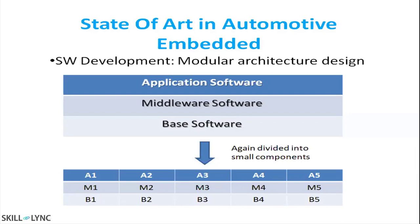Software development uses a modular design approach. As you can see in the slide, we have application software, middleware software, and base software. These three are a very basic classification — there is a lot more. It is divided into small components and each component will have a team of people working on it, providing a lot of opportunities for engineers to work on automotive embedded software.